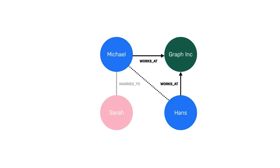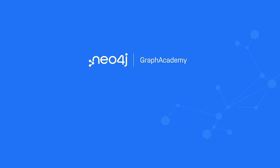Examples of relationships include things like a person knows a person, a person owns a car, a person rated a movie, a person is the parent of another person. This completes our look at an introduction to the elements of graphs.